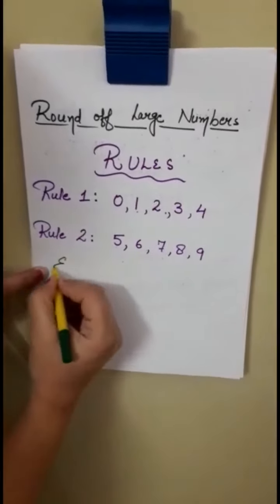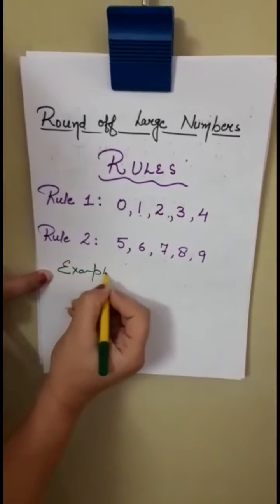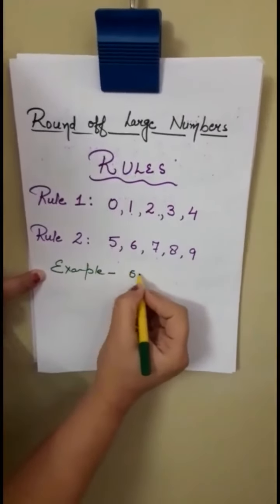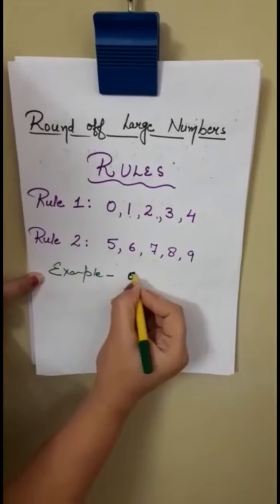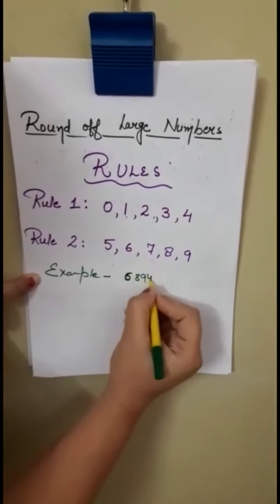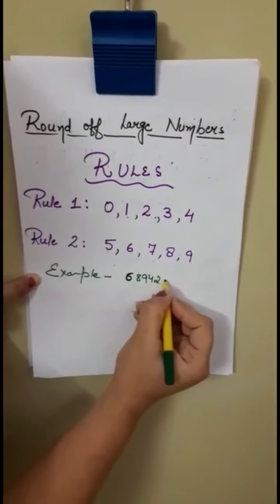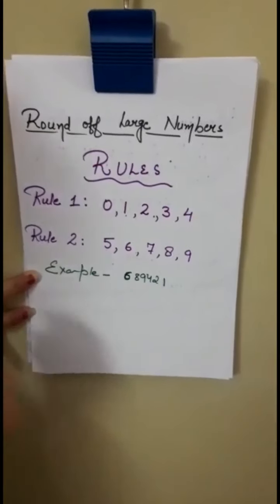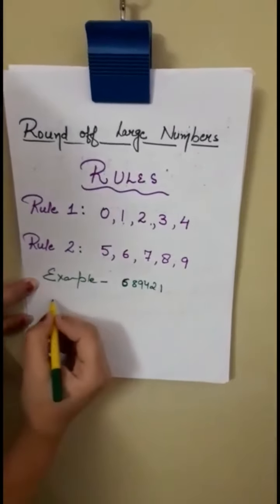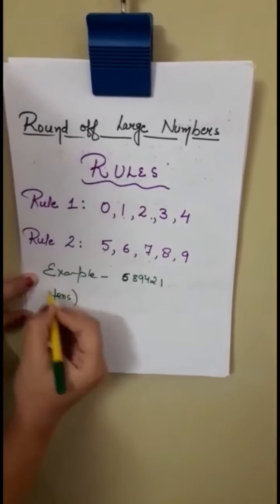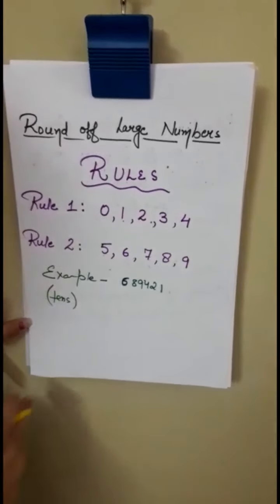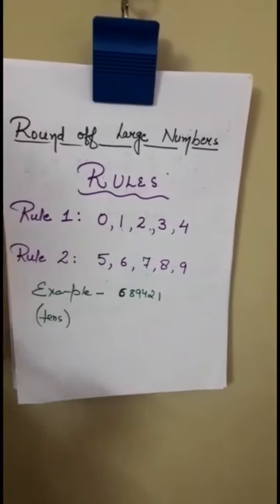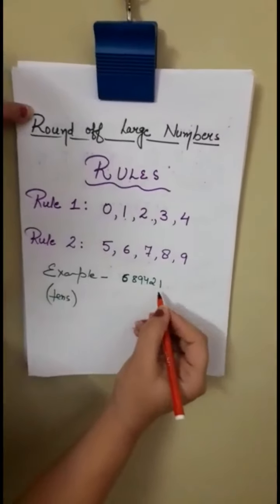Suppose I am, for example, I have this number: 689421. Okay let it be. This number I am having. I have to round off the number to nearest 10s. Mujhe isko 10s ki place pe round off karna hai. Now what you have to do is this place ko aapne round off karna hai. Sabse pahle to usko underline karlo.